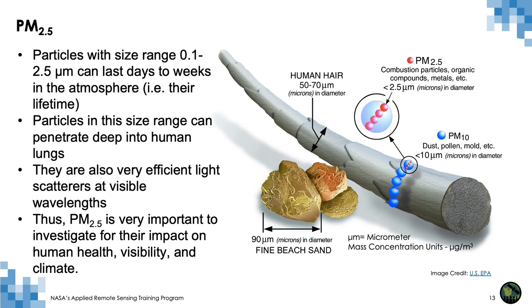PM in the size range of 0.1 to 2.5 microns has the longest residence time — days to a week — because it neither settles nor coagulates quickly. Particles in this size range are the most efficient at penetrating deep into the lungs. In addition, the light scattering efficiency per PM mass is highest at about 0.5 micron. Therefore, PM2.5 is very important to investigate for its impact on human health, visibility, and climate. The chart on the right shows their relative comparison with common objects such as human hair and sand, which relate to the size of PM2 and PM2.5.